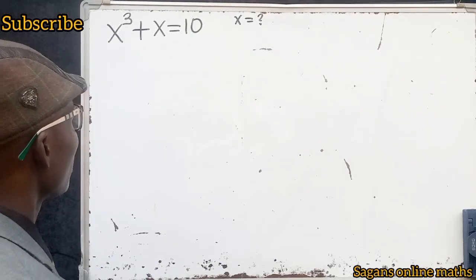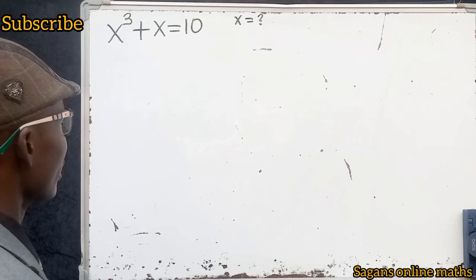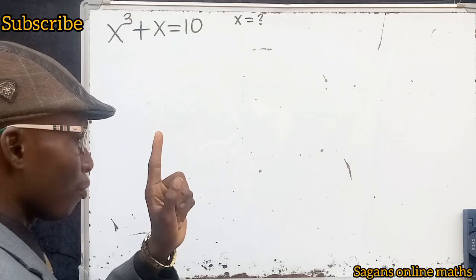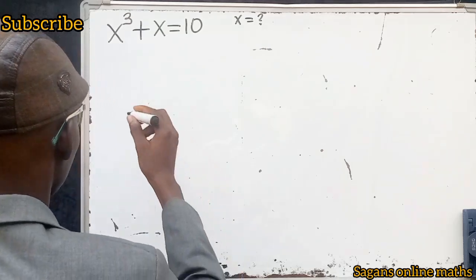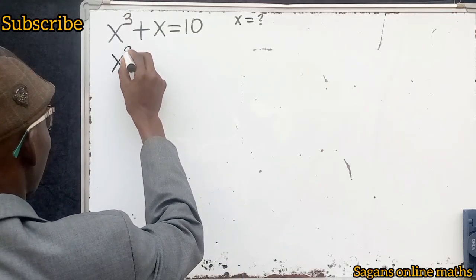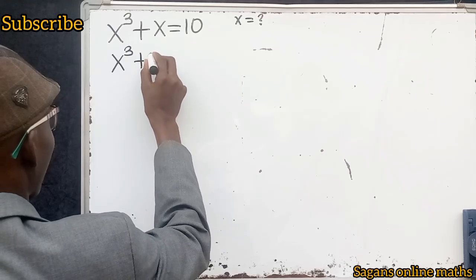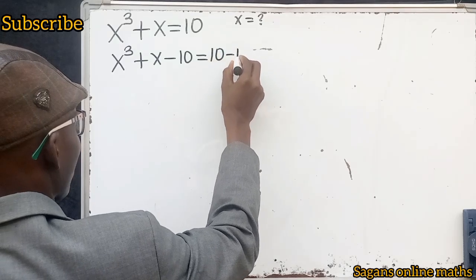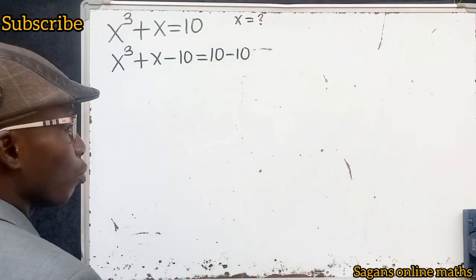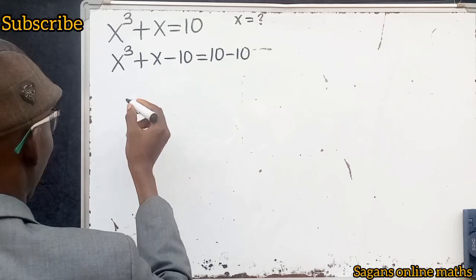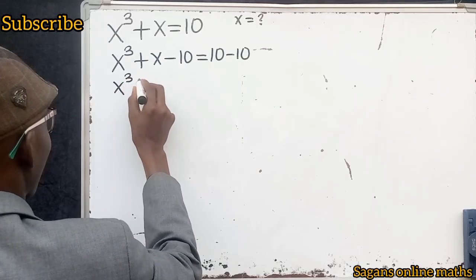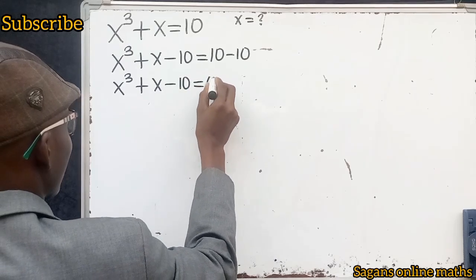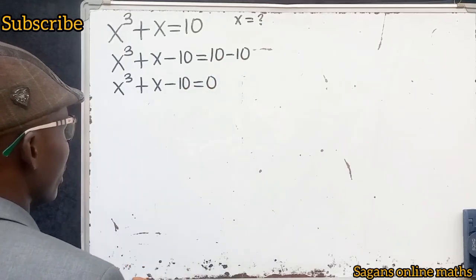Our first step is to subtract 10 from both sides of the equation. That gives us x to the power of 3 plus x minus 10 equals 10 minus 10. Because we subtract 10 from both sides, this becomes x to the power of 3 plus x minus 10 equals 0, because 10 minus 10 is 0.